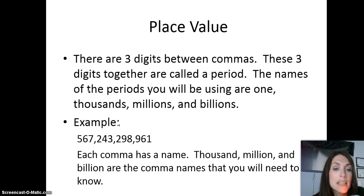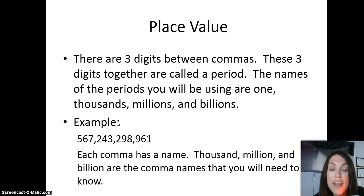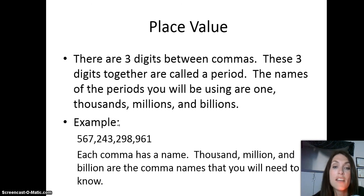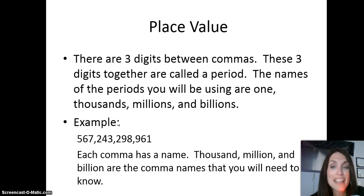Let's look at the example: we have the number 567,243,298,961. Did you hear that each comma had a name when I said that number? Each comma does have a name, and that helps us say large whole numbers correctly. Those names are thousand, million, and billion, and you'll need to be sure that you know those. You'll get a chance to practice in just a moment.